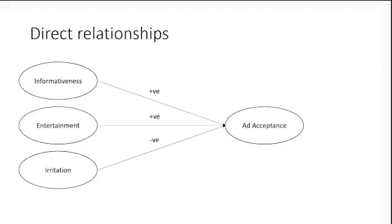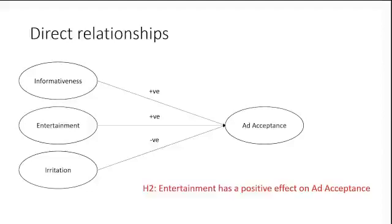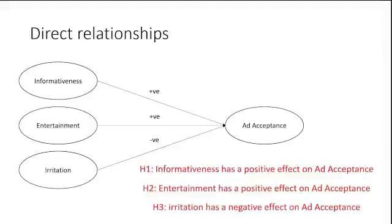Let's look into the direct relationship first. We draw this kind of conceptual framework when we only have direct relationships in our hypothesis. This is how the hypothesis would be written: informativeness has a positive effect on acceptance. You can see there's a direct relationship. Entertainment has a positive effect on ad acceptance. Irritation has a negative effect.